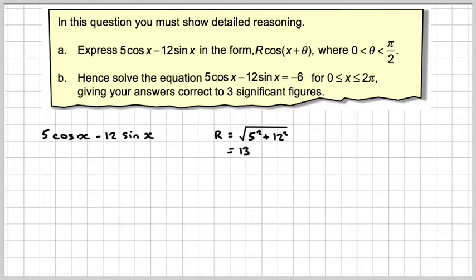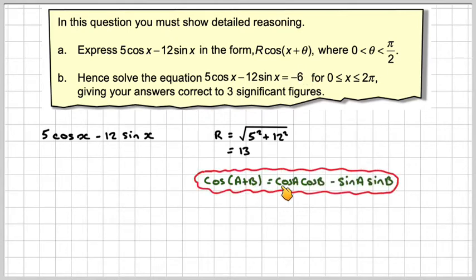We need cos(x plus theta). Because cos(a plus b) is cos a cos b minus sine a sine b, we want the angle here. The 5 to be cos and the 12 to represent sine.